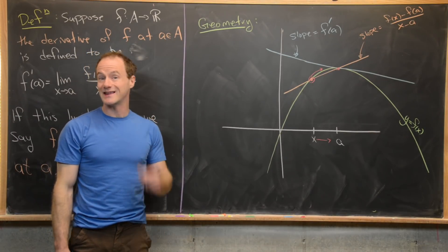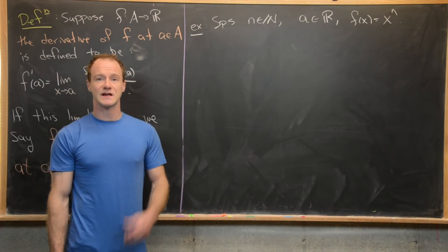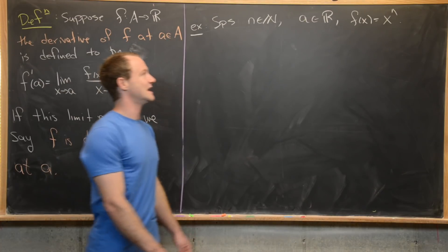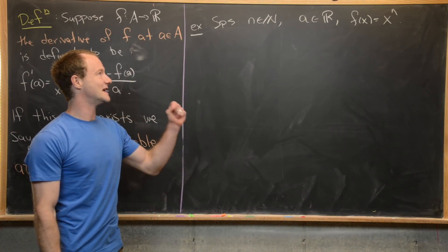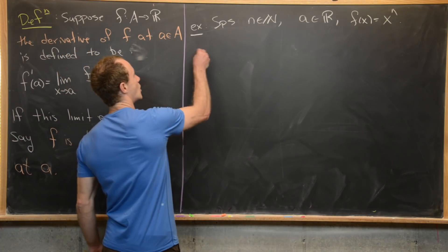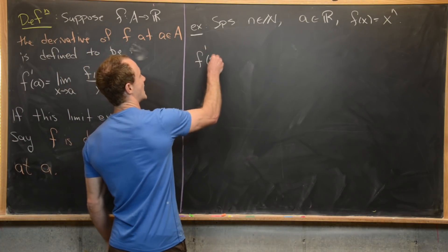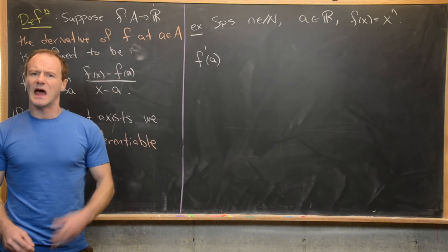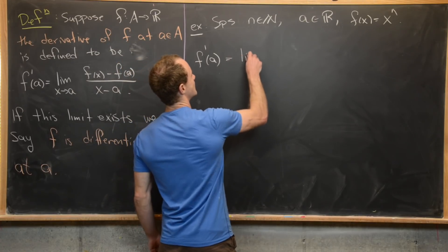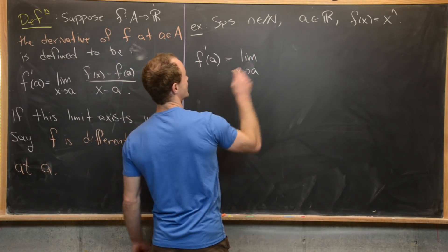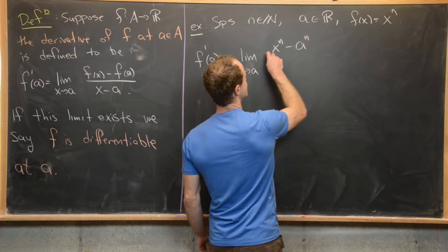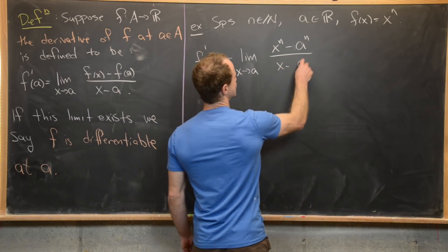So let's look at some examples. Our first example is going to start pretty simple by deriving the well-known power rule. Suppose we've got n, which is a natural number, a is any real number, and f(x) equals x to the n. Our goal is to find f prime evaluated at a and see if this corresponds to what we learned in calculus. So this is going to be the limit as x approaches a of f(x) — that's x to the n — minus f(a) — that's a to the n — all over x minus a.